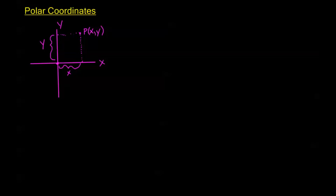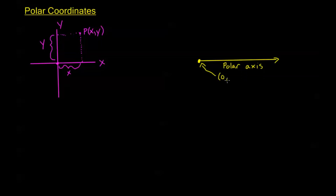Now polar coordinates works in a little bit different way. We're still going to have two different measurements, but our axis looks a little bit different. Our axis here is just going to be a ray — it ends at a point and goes off to the right infinitely. This is called our polar axis. This starting point is still the origin in rectangular coordinates, but we call it our origin or pole. You can call it either; it means the same thing.